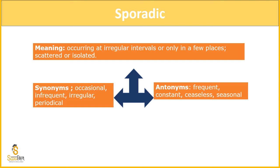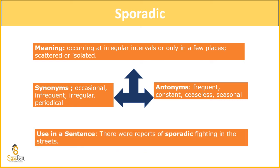Frequent and constant mean things that happen regularly all the time. Ceaseless means without hindrance — like the Earth's rotation, that is ceaseless with no interruption. Seasonal means related to seasons and happening regularly each season. Using sentence: 'There were reports of sporadic fighting in the streets' — meaning people were fighting in the streets and no one knew when it would happen next. That is called sporadic fighting.